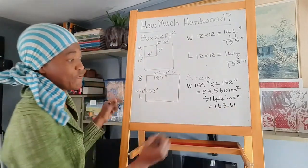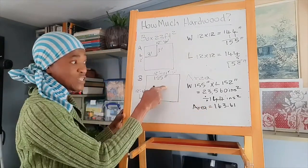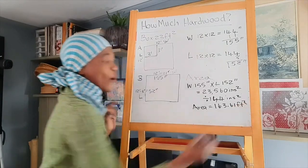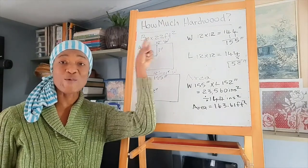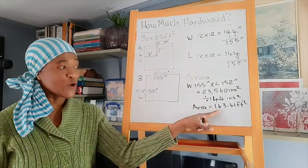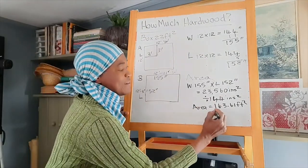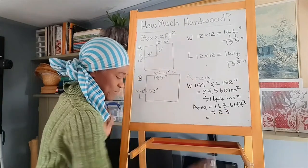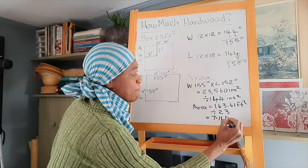163.61. So this, my friend, is the area of this room in square feet: 163.61. Now we already said that the box has 23 square feet of wood. So we'll take this 163.61 and divide this by 23.